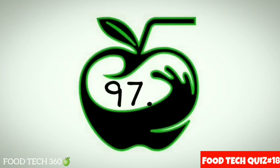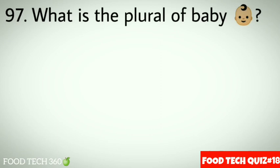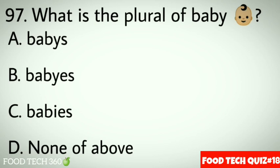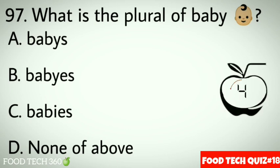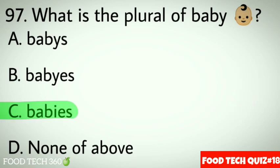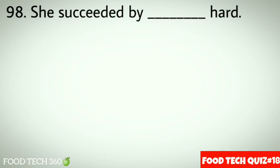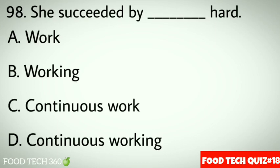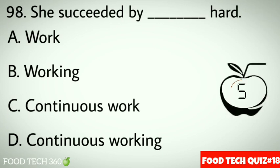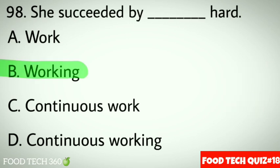Question 97: What is the plural of 'baby'? Options: A. Babys, B. Babyess, C. Babies, D. None of above. Correct answer: C. Babies. Question 98: She succeeded by dash hard. Options: A. Work, B. Working, C. Continuous work, D. Continuous working. Correct answer: B. Working.